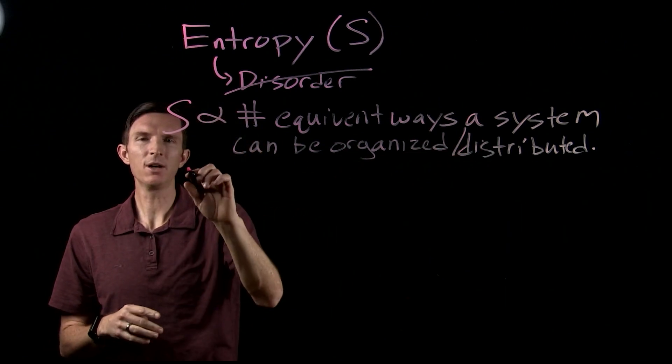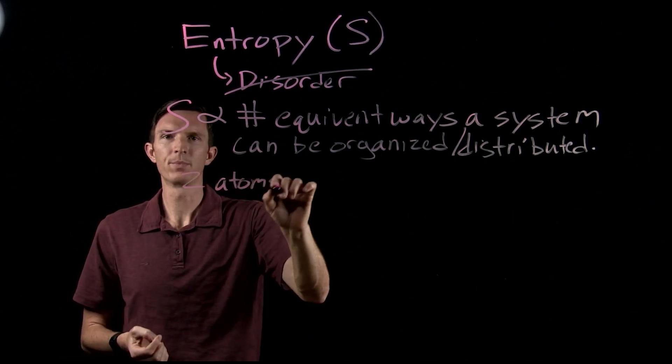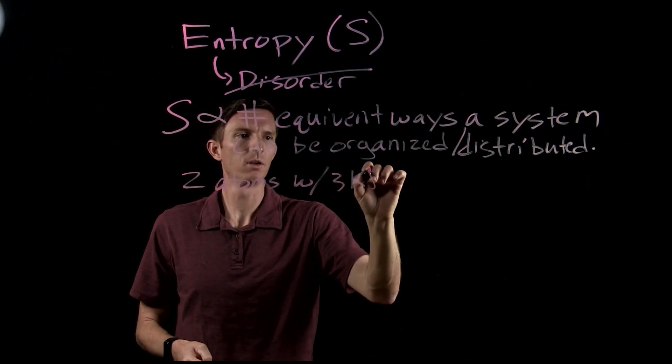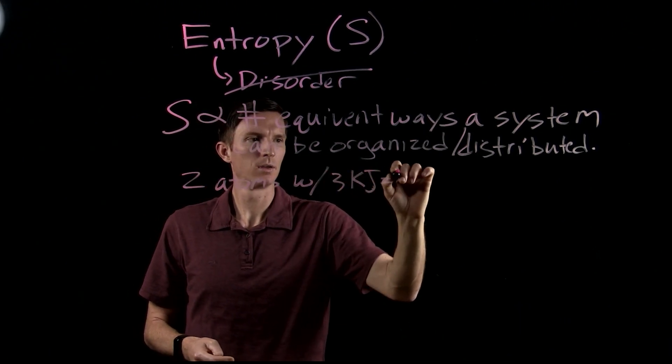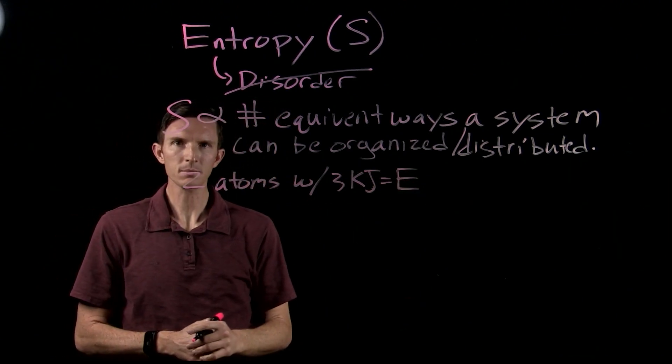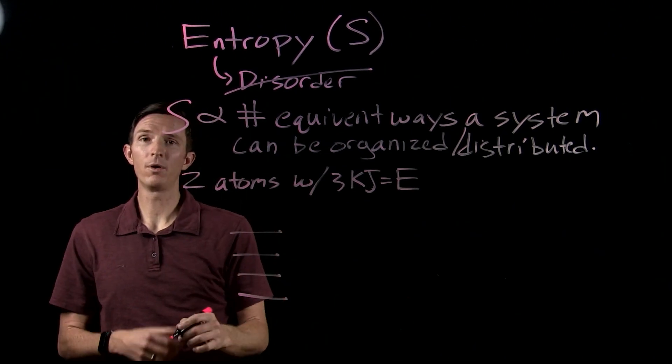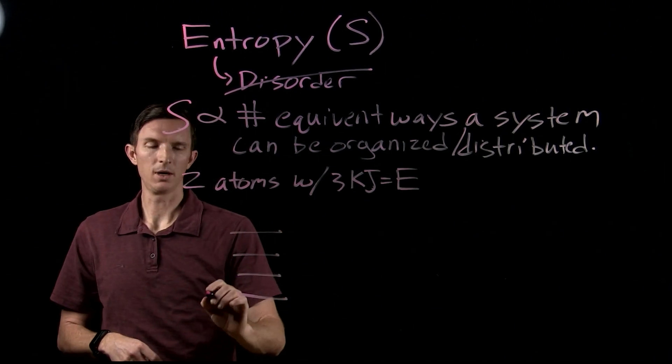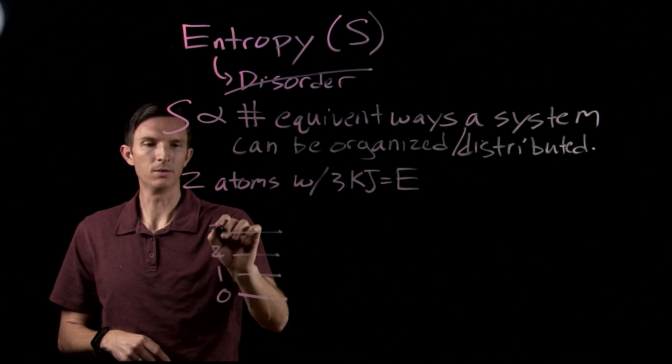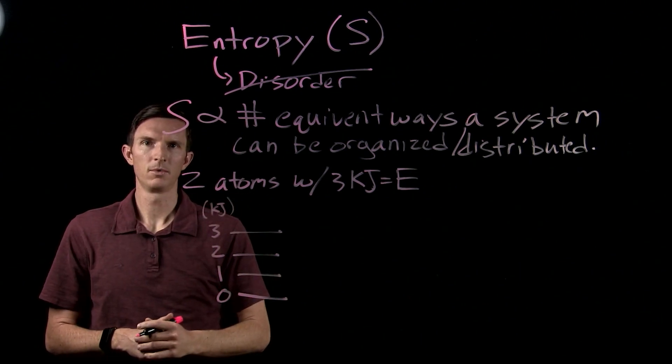So let's look at an example of this. Let's say we have two atoms with a total of three kilojoules of energy. And let's say this must be distributed over one kilojoule energy gaps. So we'd have zero, one, two, three kilojoules of energy.